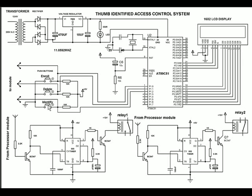The image is saved once. When the identify button is pressed after enrolling, an output is generated if it matches the stored thumb image. That output will actuate this transistor switch, which will trigger this 555 timer in monostable mode. That will drive this transistor, which will switch on this relay, and this relay will switch on any load through these contacts.